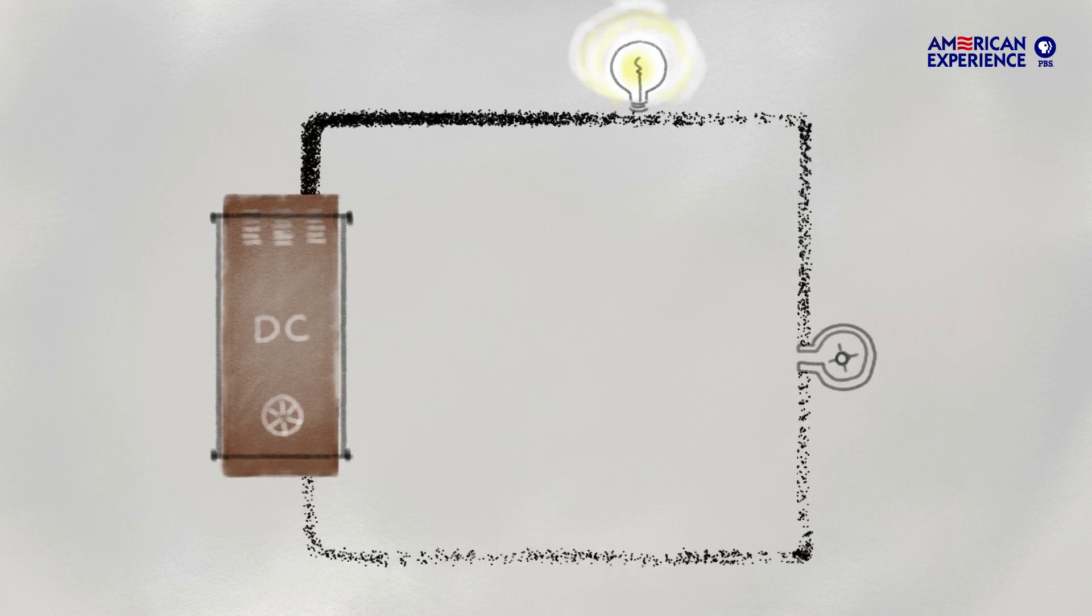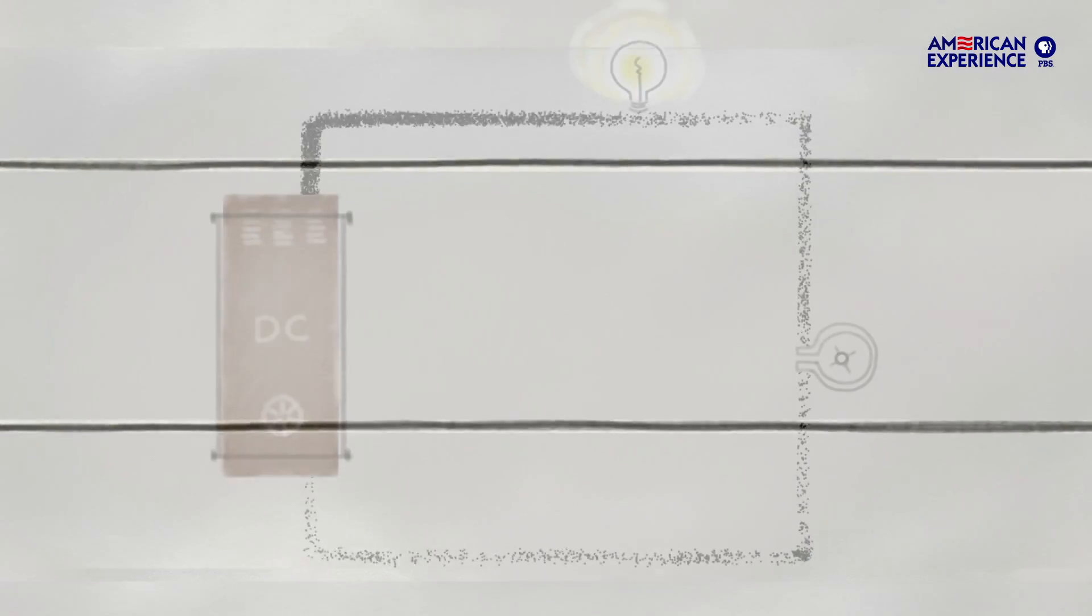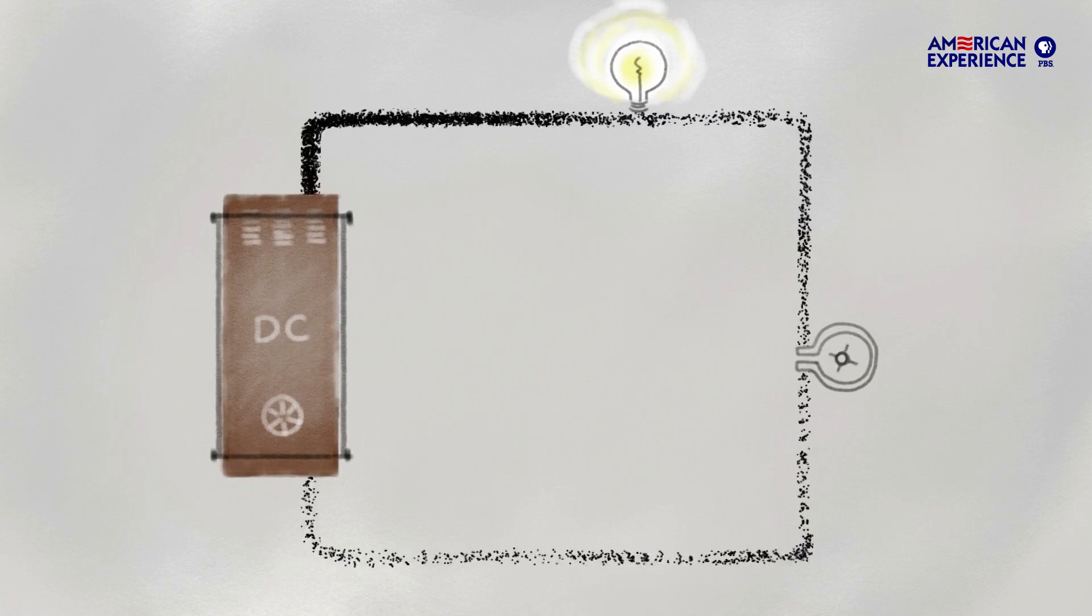But as the electrons travel, energy is lost to the resistance of the wire, like a long river whose energy is spent the farther the current travels.